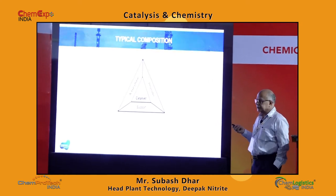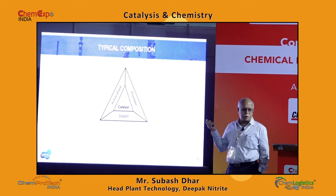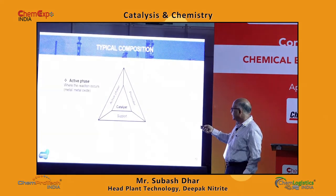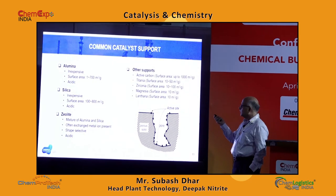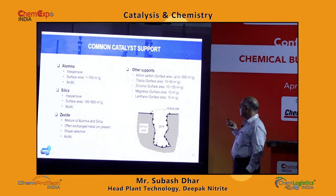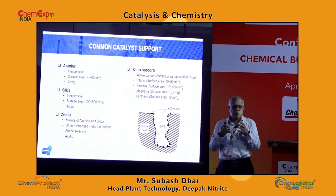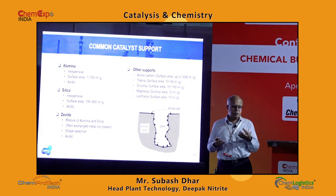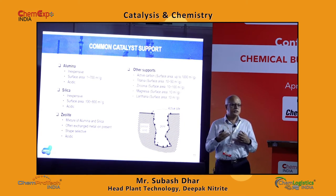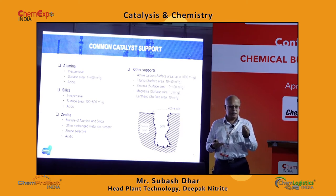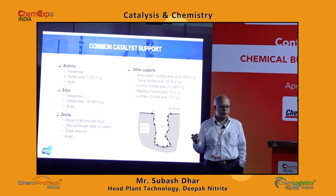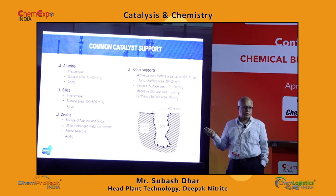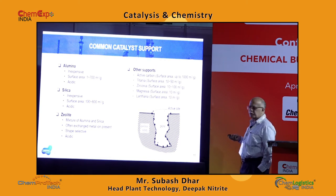A catalyst typically has an active phase and a support — a promoter may or may not be present. Common catalyst supports include alumina, silica, zeolite, and activated carbon. The main goal is to increase surface area per unit mass, so reaction sites per gram of catalyst become very high. When using precious metals as the active phase, you want to minimize the quantity used while still achieving your desired conversion.